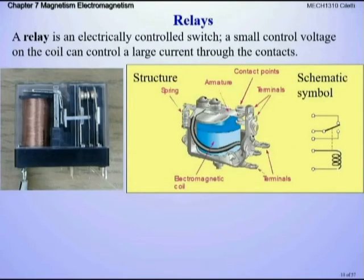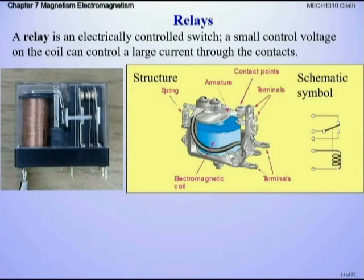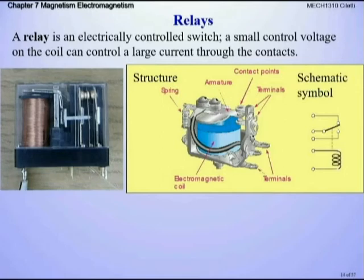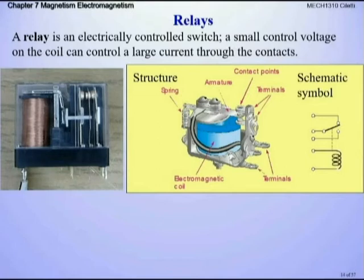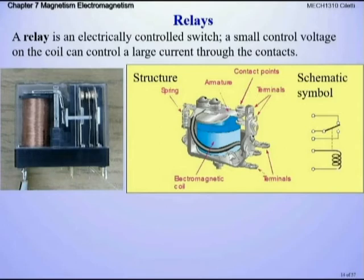Another very common application is a relay. There's a coil of wire; when we give that coil current, it creates a magnetic field and closes the relay. This is a normally open relay — giving the coil current closes it down. A relay is simply an electrically controlled switch, either making current flow or not, and the switch state is based on the current given to the electromagnetic coil.